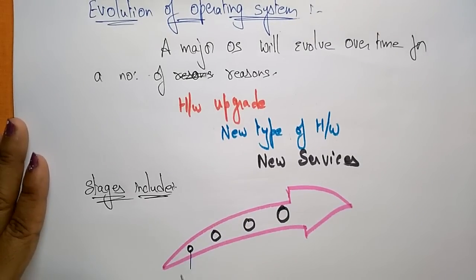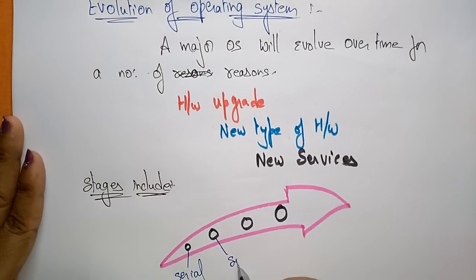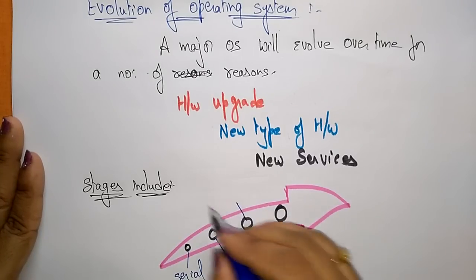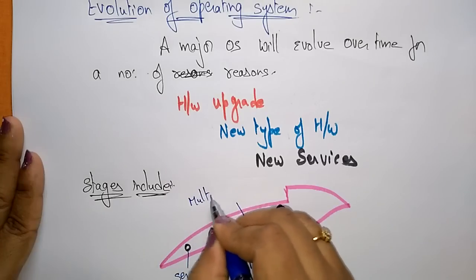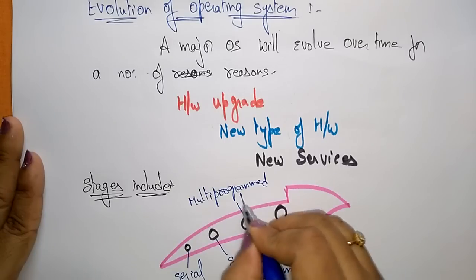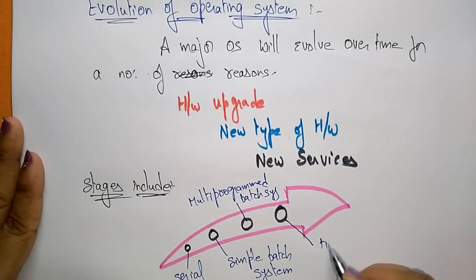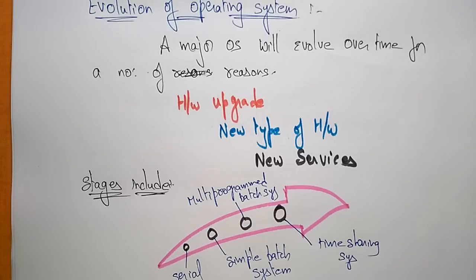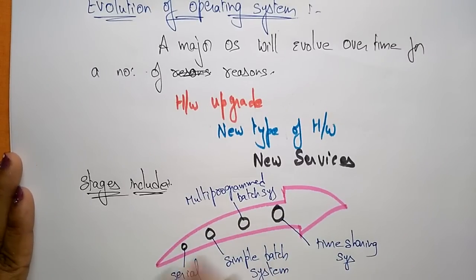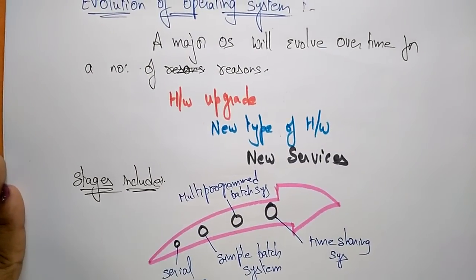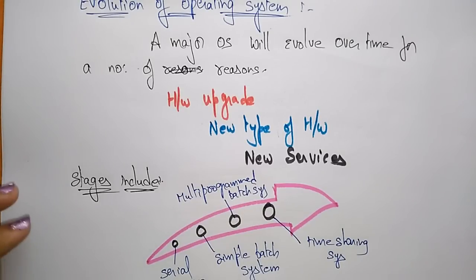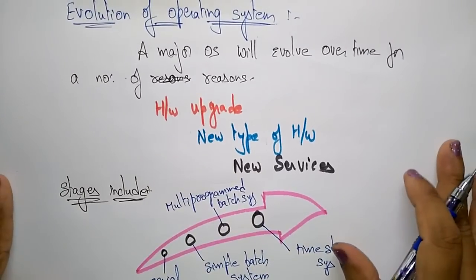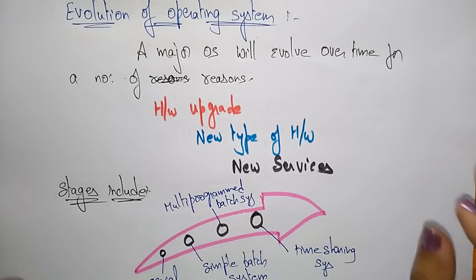The stages included in the evolution of the operating system are: first, serial processing; next, the simple batch system; then the multiprogramming batched system; followed by the time-sharing system. There are still more stages — the parallel system, distributed system, and real-time operating system. These are the different stages in the evolution of the operating system. This video covers the introduction part of the operating system. Thank you.